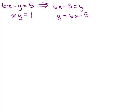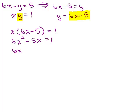So that's what we're going to substitute in for y into the other equation. We have x times 6x minus 5 equals 1. We need to use the distributive property: 6x squared minus 5x equals 1, and we see this is a quadratic.